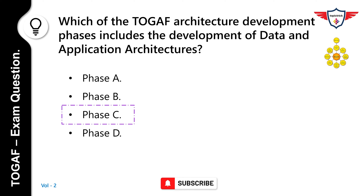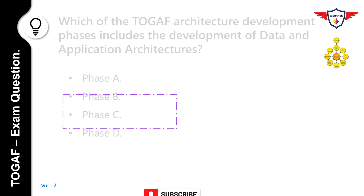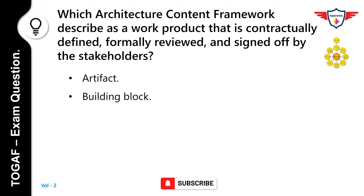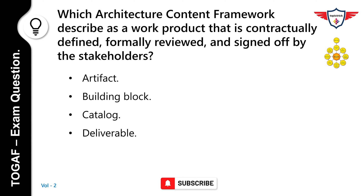Which architecture content framework term describes a work product that is contractually defined, formally reviewed, and signed off by the stakeholders? Options: Artifact, Building Block, Catalog, Deliverable. The correct answer is Deliverable. A Deliverable is a work product that is contractually specified and in turn formally reviewed, agreed, and signed off by the stakeholders.